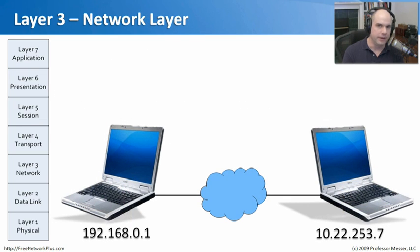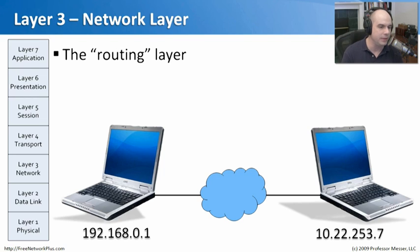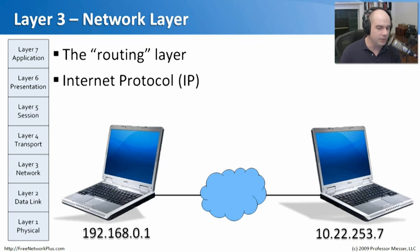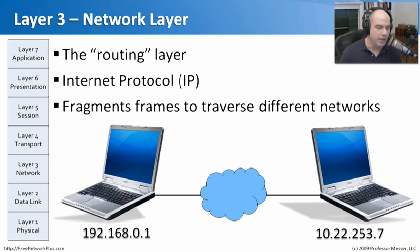Layer 3 is the network layer. While layer 2 handles MAC addresses between two local devices, layer 3 handles routing when devices are separated over long distances. This is often called the routing layer — switches are layer two, routers are layer three. It's also at this layer that the IP protocol is introduced, sitting on top of MAC addresses to send information across the network.